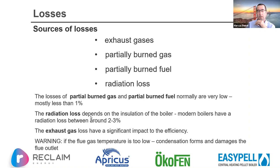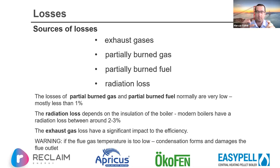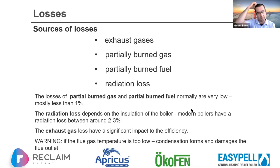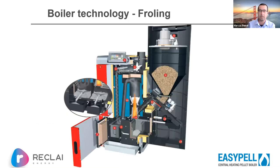Radiative losses are low because there are good levels of insulation. Anyone who's seen a pellet boiler will know the controls, display, and circuitry are all on board, and these don't like getting too hot, so the boiler must be very well insulated — otherwise it would fry its own controls. Exhaust gases can have a significant impact on efficiency, but there's a balance: if the flue gas is too cool, condensation forms and can damage the flue outlet — usually a minimum of 120 to 160 degrees.